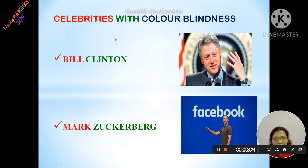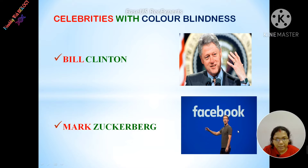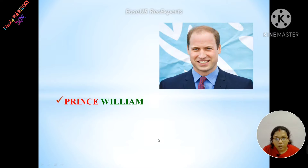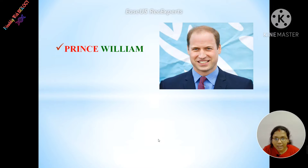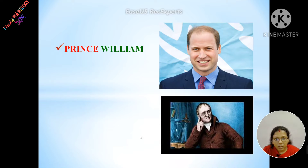Here is a list of celebrities with color blindness. Bill Clinton, the former president of the USA, is colorblind. Mark Zuckerberg, the founder of Facebook, is red-green colorblind — for that reason he chose blue as the Facebook color. Prince William is also colorblind, and scientist John Dalton was also colorblind.